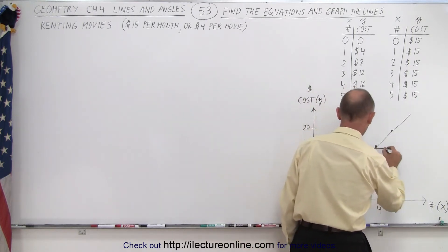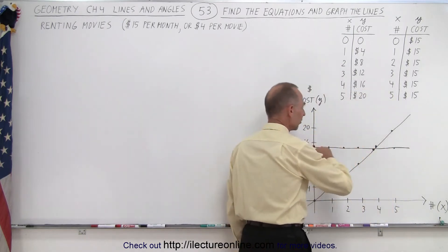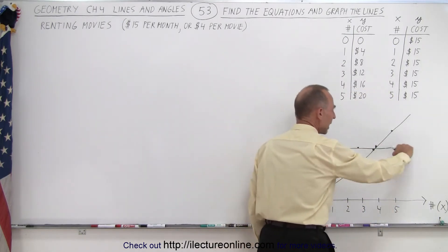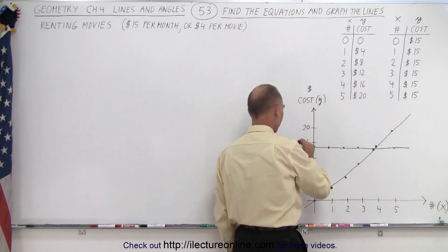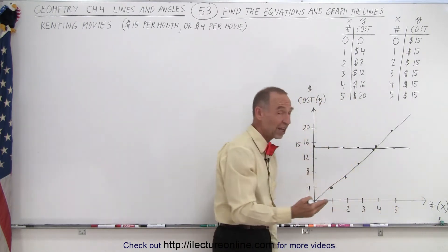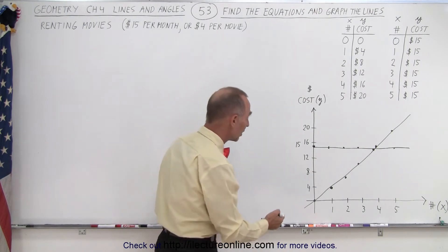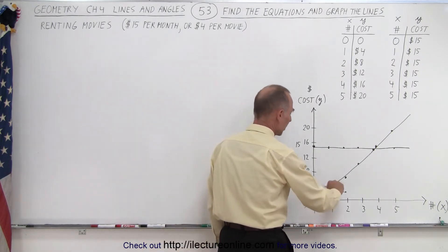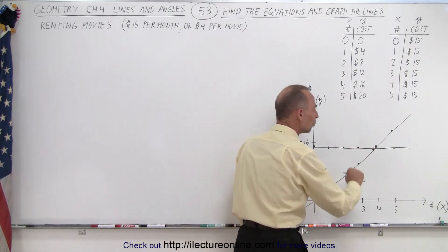If you connect all those points right here, notice that this line represents how much you pay fifteen dollars for the number of movies that you rent. It doesn't change as the number of movies changes. Here you can see how much you pay. You pay more and more and more as you rent more and more movies.